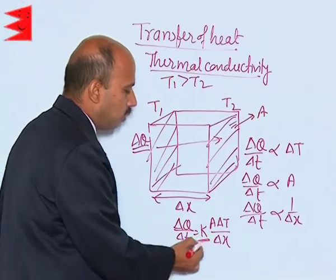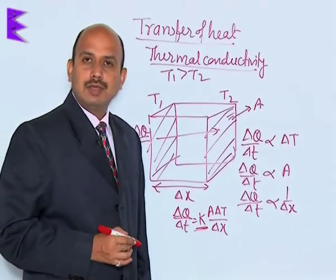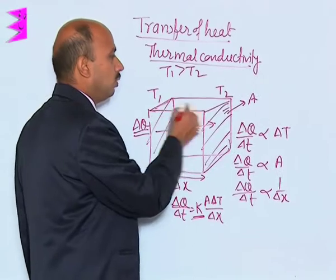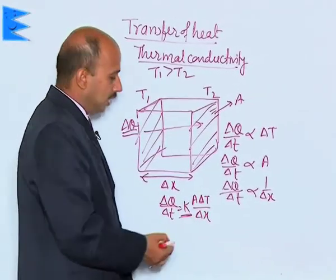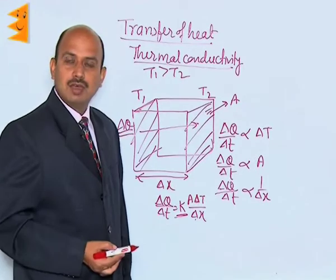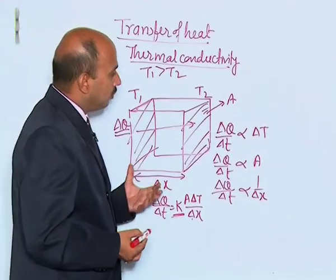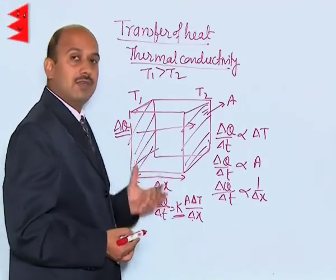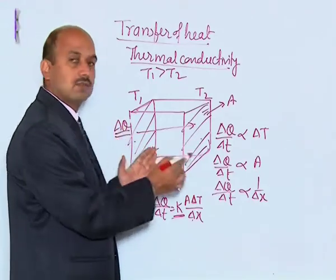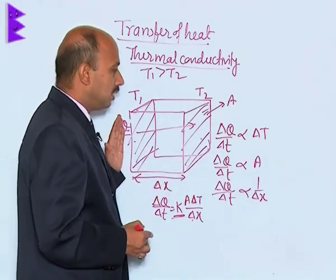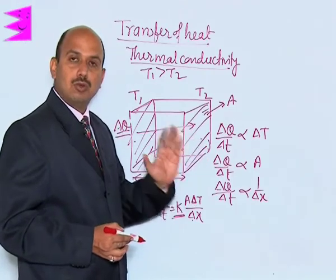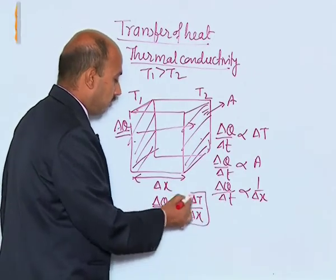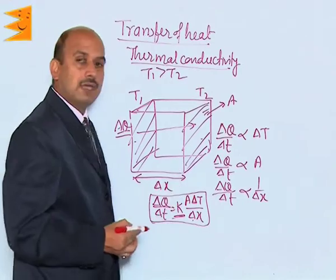Here, k is known as the coefficient of thermal conductivity. Delta T is the change in temperature, which is simply T1 minus T2. Delta x is the distance between the two faces. We are assuming no heat is being transferred or lost to the surroundings through the other faces of this solid — only through these two faces. So when heat is given, it is directly transferred from one face to the other with no heat loss from the other faces.